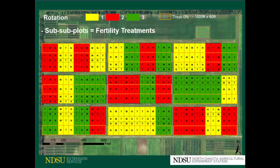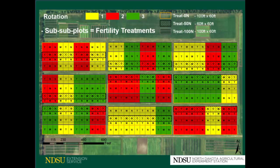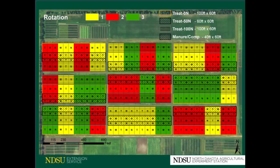Another layer of treatments are the fertility treatments that run east-west. We have a treatment with zero nitrogen, another with 50 pounds of nitrogen per acre, another with 100 pounds of nitrogen per acre, and the last one is a feedlot compost manure applied once every four years at a rate of 200 pounds of available nitrogen per acre. The nitrogen treatments are applied every single year for the non-legume crops, and the compost is applied just once every four years with no additional fertilizer added.